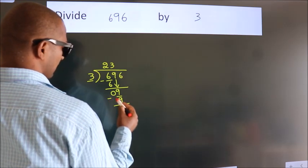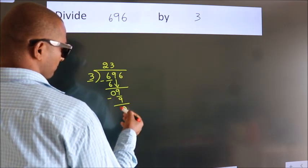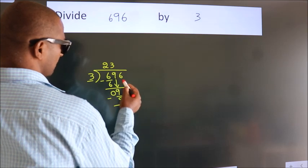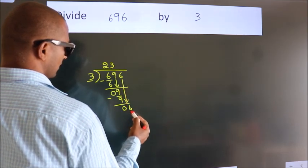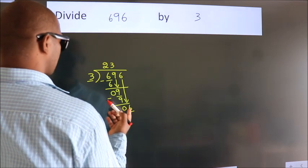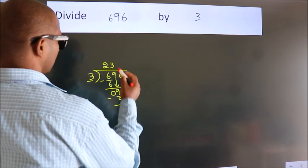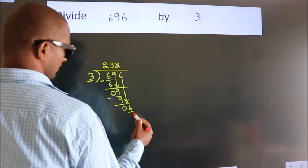After this, bring down the beside number. So, 6 down. When do we get 6? In 3 table, 3 twos, 6. Now, we subtract. We get 0.